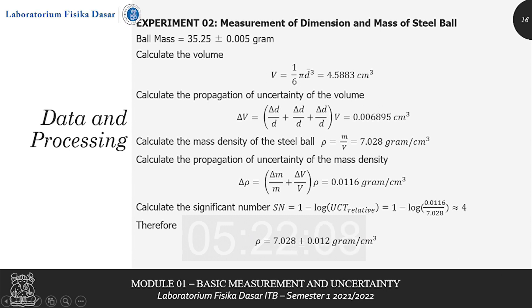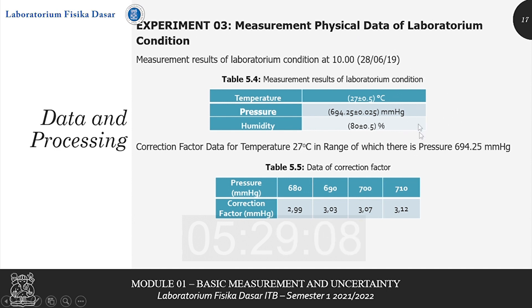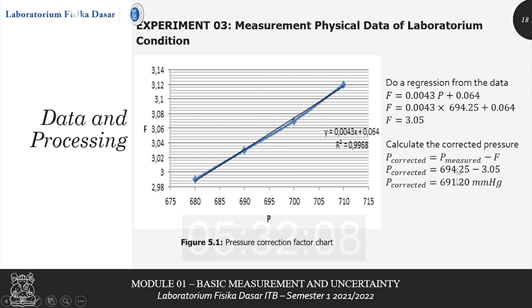For the third experiment, measurement of physical data of laboratory conditions, start by writing down the data given, then do linear regression, and use the given formula to get the corrective pressure.